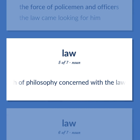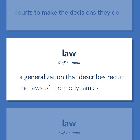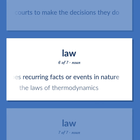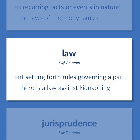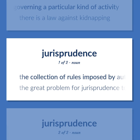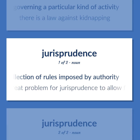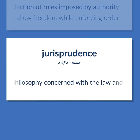The branch of philosophy concerned with the law and the principles that lead courts to make the decisions they do. A generalization that describes recurring facts or events in nature — the laws of thermodynamics. Legal documents setting forth rules governing a particular kind of activity — there is a law against kidnapping. The collection of rules imposed by authority. The great problem for jurisprudence: to allow freedom while enforcing order. The branch of philosophy concerned with the law and the principles that lead courts to make the decisions they do.